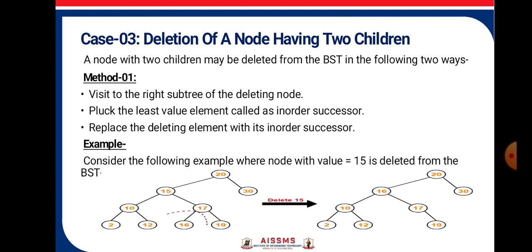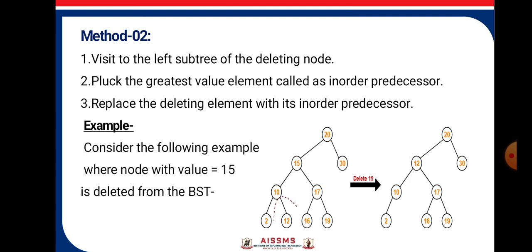Deletion of a node having two children. Method 1: Visit the right subtree of the deleting node, find the least value element called the in-order successor, and replace the deleting element with its in-order successor. In the example where node 15 is deleted, 16 is inserted in its place. Method 2: Visit the left subtree of the deleting node, find the greatest value element called the in-order predecessor, and replace the deleting element with its in-order predecessor. When value 15 is deleted, 12 is placed there, and the child of 12 will be 10, with 2 to the left. In this manner we have studied the binary search tree operations.